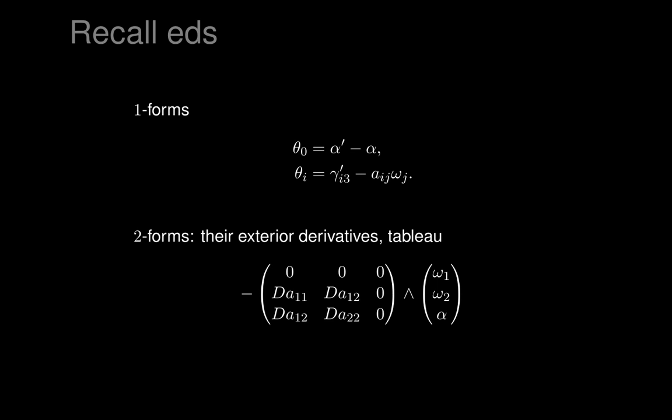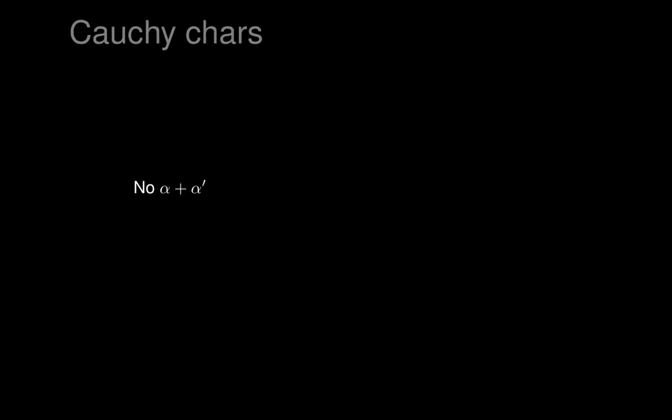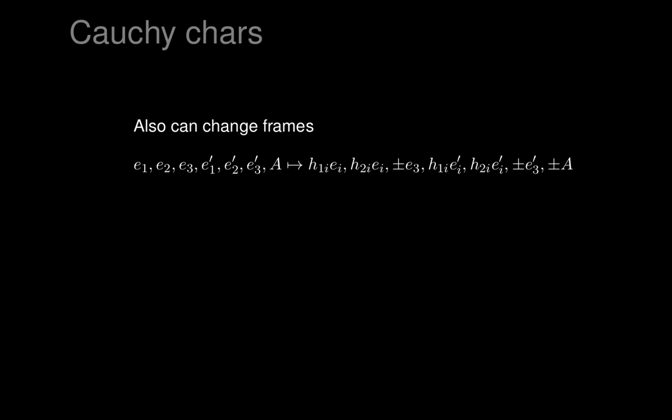We can look for a dual vector field to that missing form in the co-framing. But we could do more — we could look for symmetries of the exterior differential system. We want to quotient not just by Cauchy characteristic vector fields, but also by some discrete symmetries, looking for all the symmetries we can find.